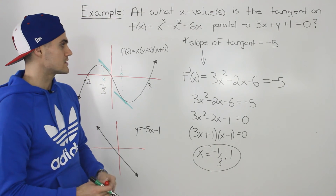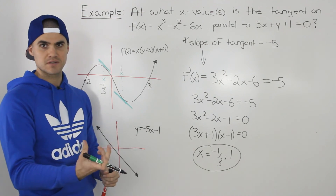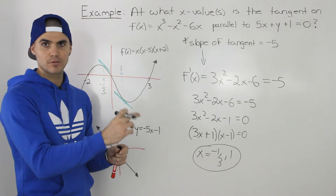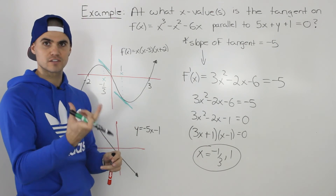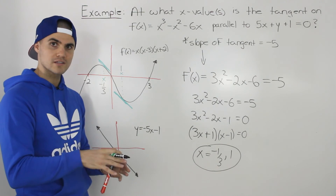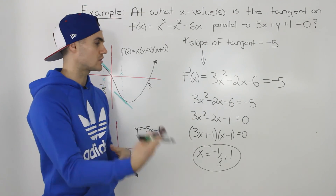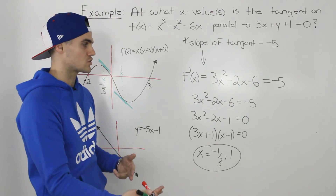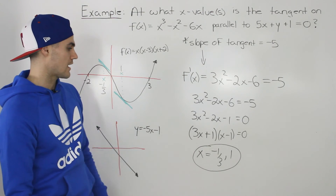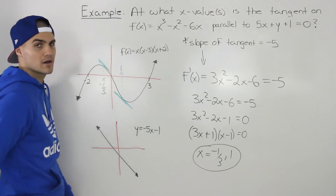Usually we find the derivative and plug in a specific x value to get a slope. But in this case, we're given the slope of the tangent and have to find the x values — it's sort of the opposite. Doing that, we get x = -1/3 and x = 1.